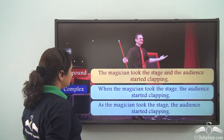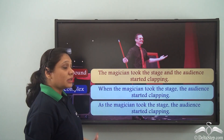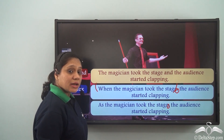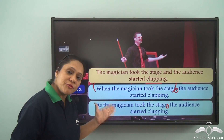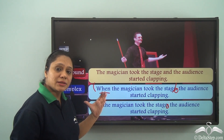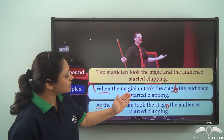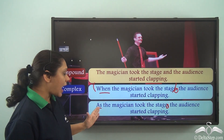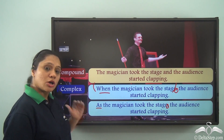We can also write it as 'As the magician took the stage, the audience started clapping.' Note that a comma separates the main clause and subordinate clause. Alternatively, the conjunction can appear in the middle: 'The audience started clapping when the magician took the stage' or 'The audience started clapping as the magician took the stage.' All these forms are correct.